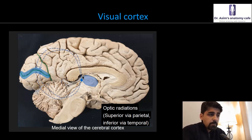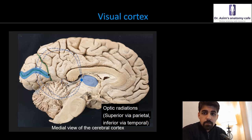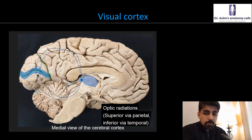The superior optic radiations pass through the parietal lobe and go into the superior wall of the calcarine sulcus — the cuneate part of the primary visual area. The inferior optic radiations go down through the temporal lobe and take the visual information projected onto the lingual part of the calcarine sulcus, in the lower part of the calcarine sulcus in the primary visual area, Brodmann's area 17.